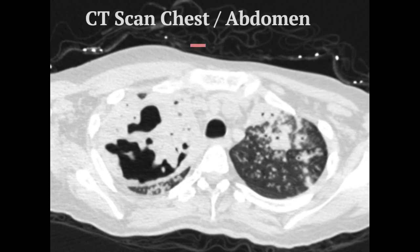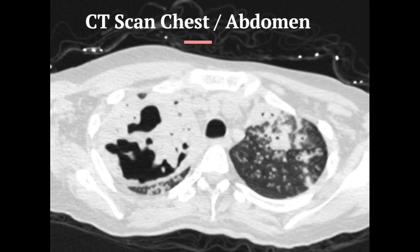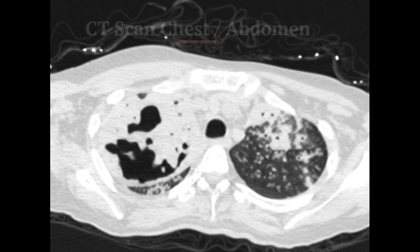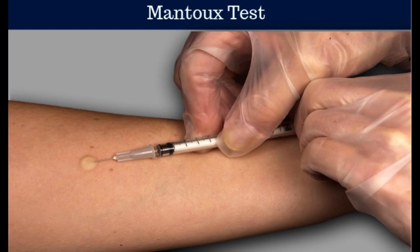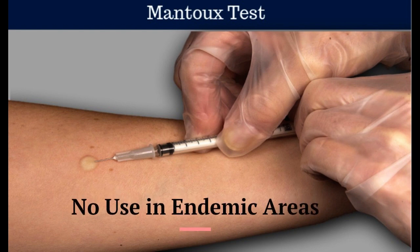A CT scan of the chest and abdomen aids in diagnosis by detecting other foci of present or past TB. A Mantoux test may be done; however, it is of little value in countries where TB is endemic.